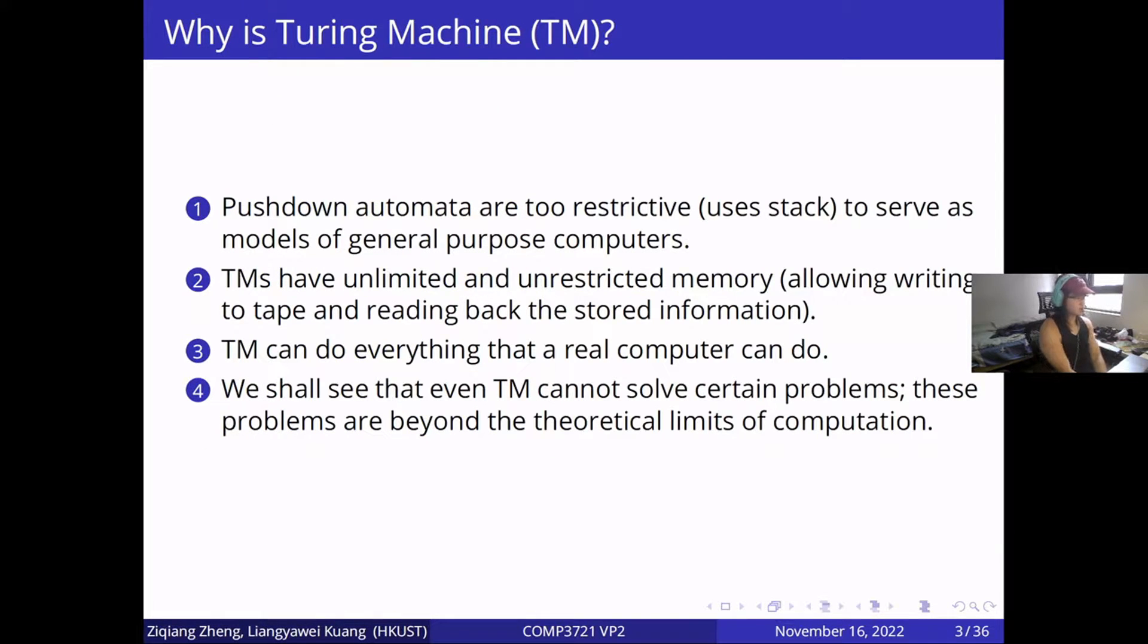The question is why is Turing machine? There are several answers. Pushdown automata are too restrictive to serve as models of general-purpose computers. Turing machine, with unlimited and unrestricted memory, can do everything that a real computer can do.